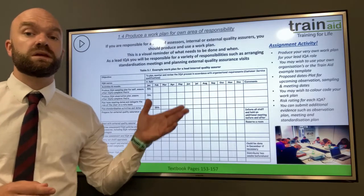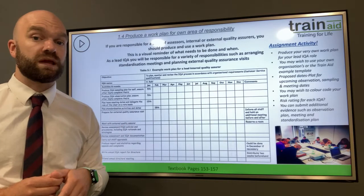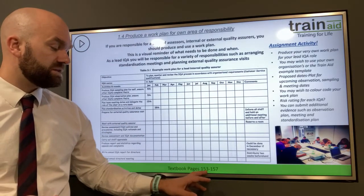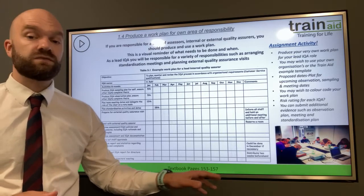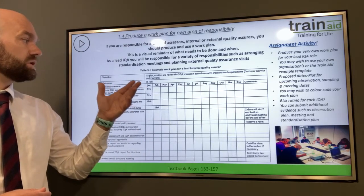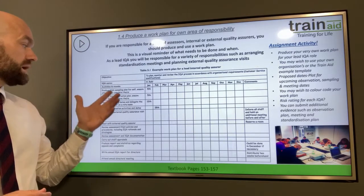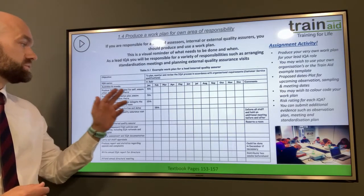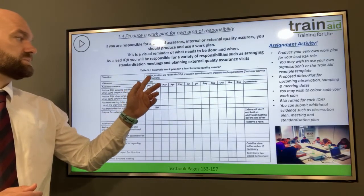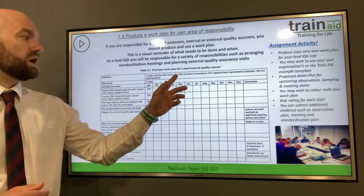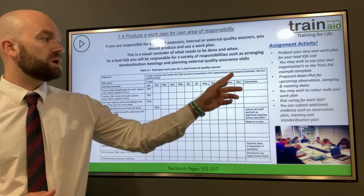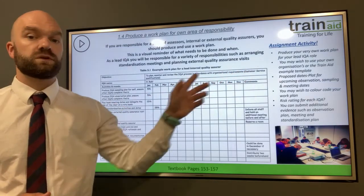As you can see behind me, this has been taken from Anne Gravel's textbook — do have a look at pages 153 to 157. In terms of this table, we can see a range of activities and also the months. This example is the plan, monitor and review IQA process.